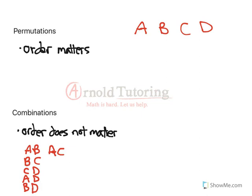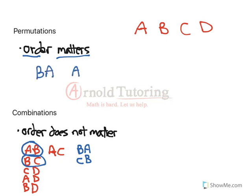Notice I did not write B, A — in other words, the reverse of A and B — or C, B, the reverse of B and C. These are not counted as separate ones in combinations. In permutations, they would be, because order matters — so we're counting B, A as a separate arrangement from A, B. But in combinations, we are not.